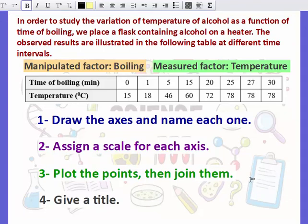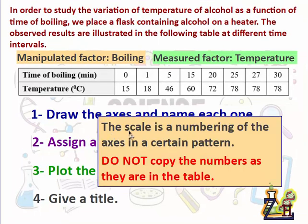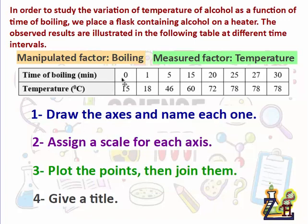The next step is to assign a scale for each axis. A scale is the numbering of the axis in a certain pattern. We should not copy the numbers exactly as they appear in the table. Instead, for example, we number so that each one centimeter represents one minute, two minutes, or five minutes — a regular pattern.